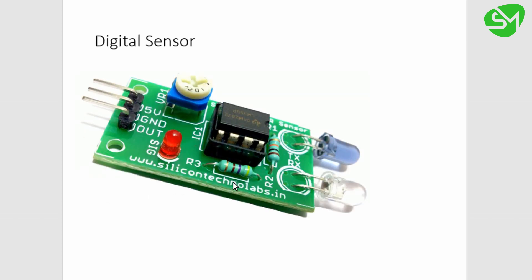The first one is digital sensor. A very good example of a digital sensor is an IR proximity sensor. It has three pins: five volt, ground, and output. We provide five volts and ground, and it provides output through the output pin. When I place any object in the sensing region, this output pin becomes high — it provides a five volt signal. When I remove that object, it gives a zero volt signal. This is the working of a digital sensor.